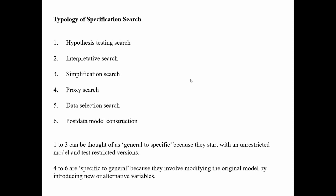Categories one to three can be thought of as general-to-specific approaches, because they tend to start with an unrestricted model and then test restrictions imposed or generated by theory, or necessary to improve the model's performance. Categories four to six are more specific-to-general, because they involve modifying an original model by introducing new or alternative variables. Let's take a look at how these work in practice.